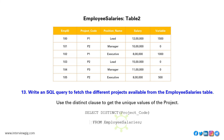Write an SQL query to fetch the different projects available from the employee salaries table. Use the DISTINCT clause to get unique project values. SELECT DISTINCT project_code FROM employee_salaries.